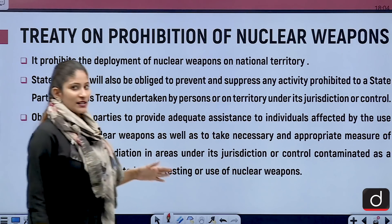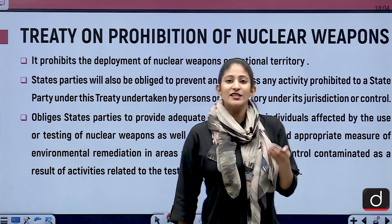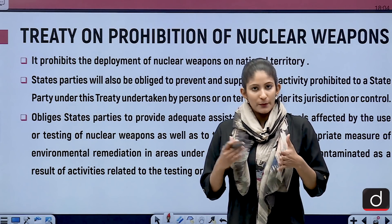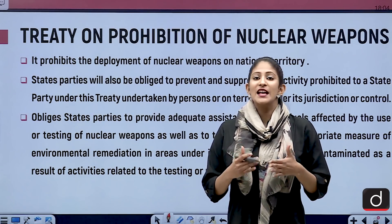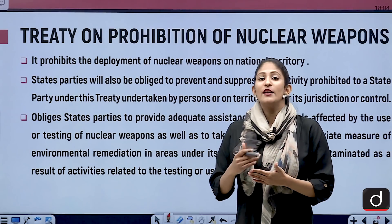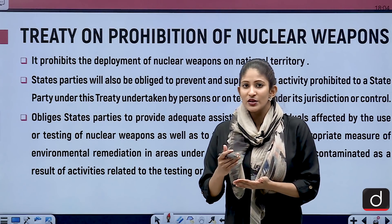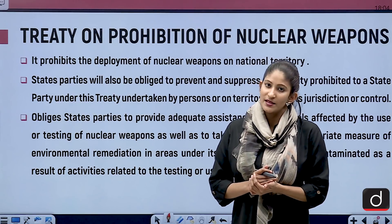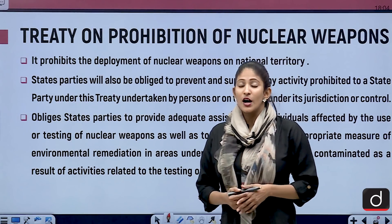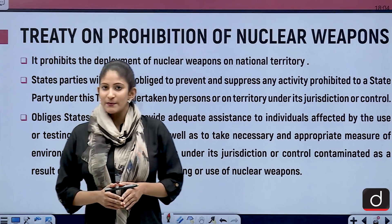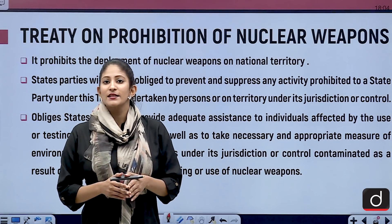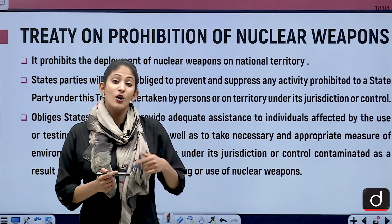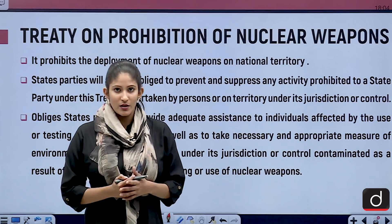In totality, this treaty wants different state parties to prohibit and prevent, and also assist individuals who have been affected by the use of nuclear weapons. It also takes into account the environmental aspects — the negative impacts of nuclear weapons on the environment are taken into account.